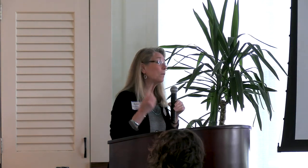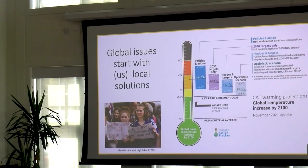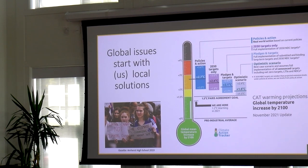We do need to be part of the process of getting ourselves off fossil fuels. In a global sense, we've already raised the temperature of the planet 1.2 degrees centigrade. If we're going to keep ourselves below the Paris Agreement target of 1.5 degrees — which came from the IPCC — we've only got a little bit of wiggle room left. The 2030 targets and country pledges are all well above that 1.5 degrees, and unfortunately, that's where countries' pledges are right now.